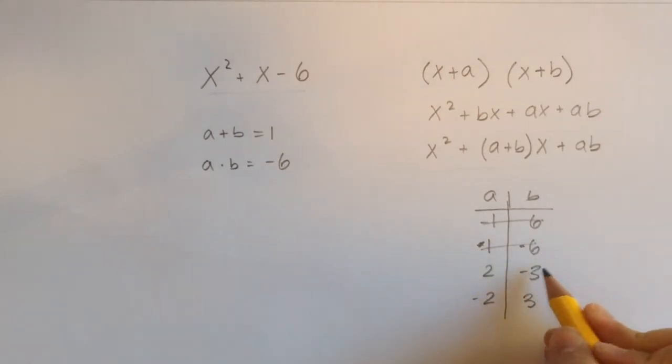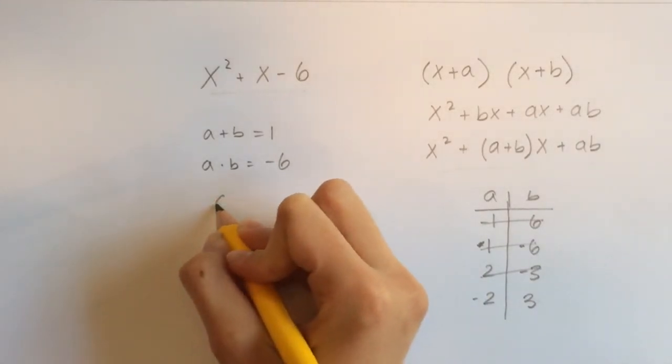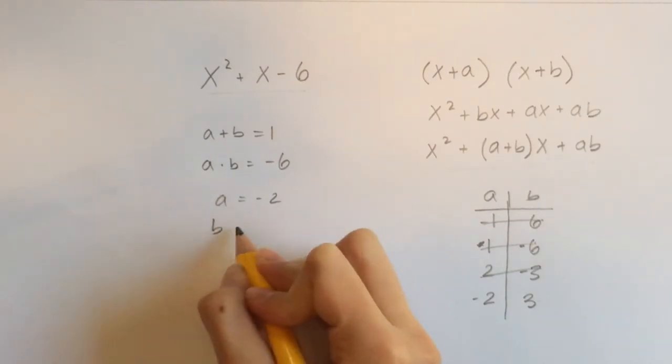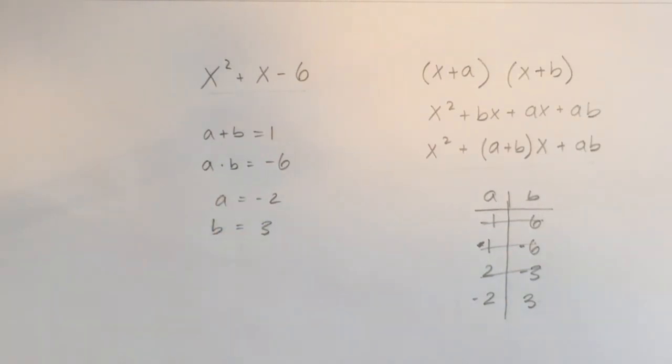Negative 2 plus 3. Yes, that is 1. So we know that our a equals negative 2, and that our b equals 3.